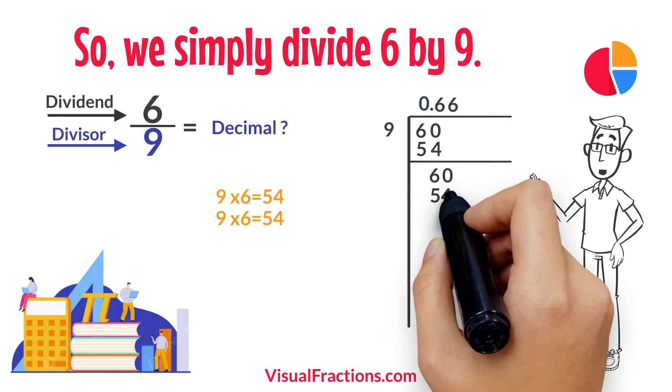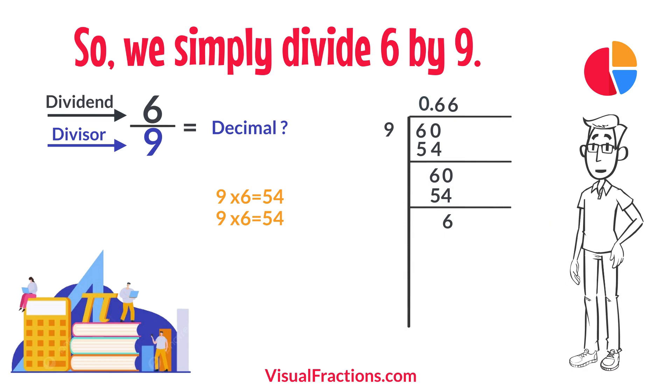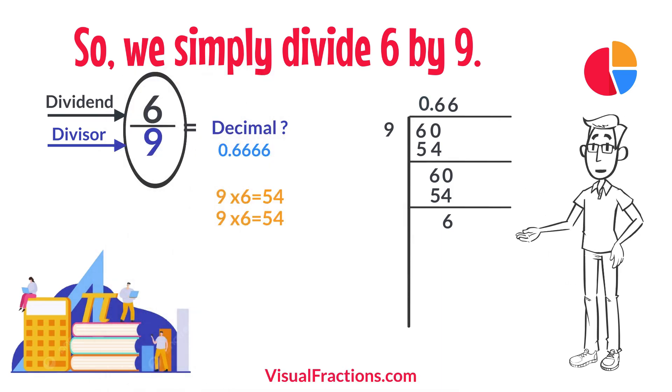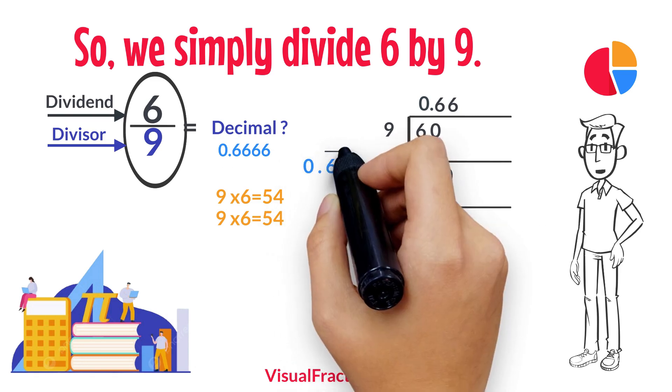As we continue this process, the 6 keeps repeating indefinitely, showing the repeating nature of the decimal. Therefore, the fraction 6 ninths converted to a decimal is 0.6666, which can also be written as 0.6 with a bar over the 6.